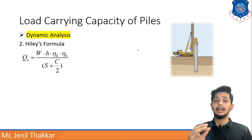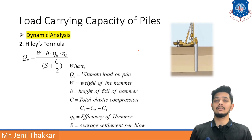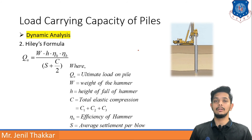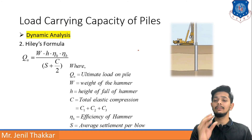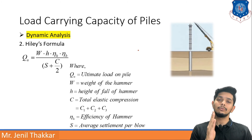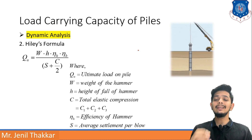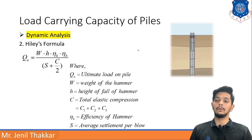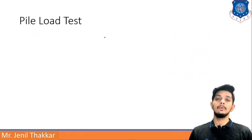The second dynamic formula is Hiley's formula: Qu = (W × H × ηh × ηb) / (S + C/2), where Qu is the ultimate load, W is the weight of the hammer, H is the height of fall of the hammer, C is the total elastic compression (C = C1 + C2 + C3, divided into three parts), ηh is the efficiency of the hammer, S is the average settlement per blow, and ηb is the efficiency of the blow.